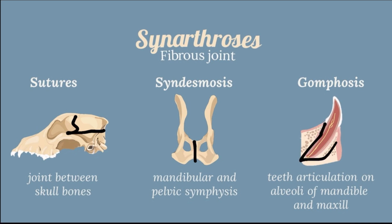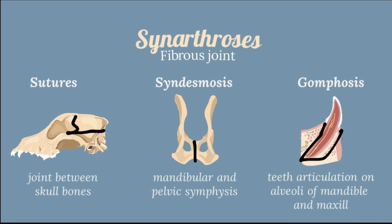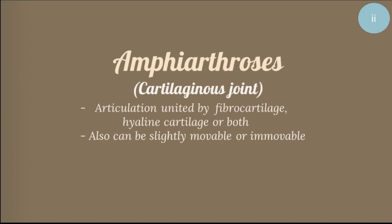Gomphosis is the specialized articulation of teeth in their alveoli or sockets in the mandible and maxilla. Next is amphiarthrosis, or the cartilaginous joint, which is an articulation united by fibrous cartilage, hyaline cartilage, or both, and can be slightly movable or immovable.